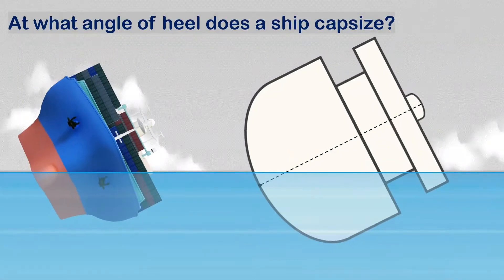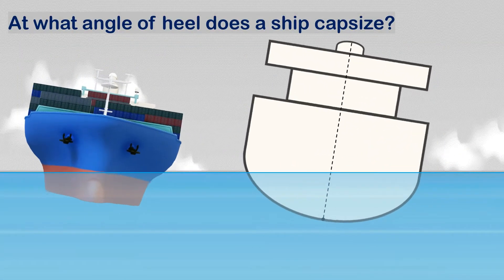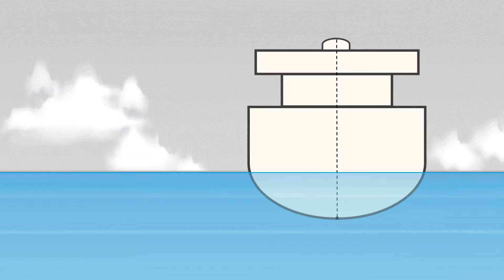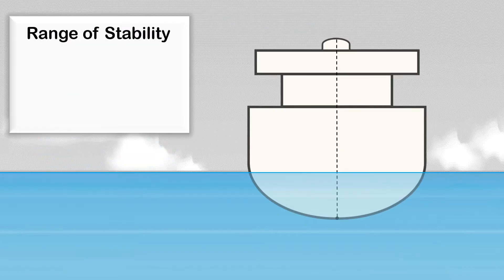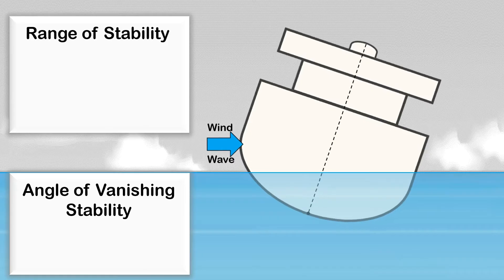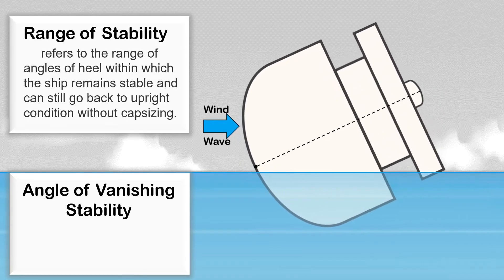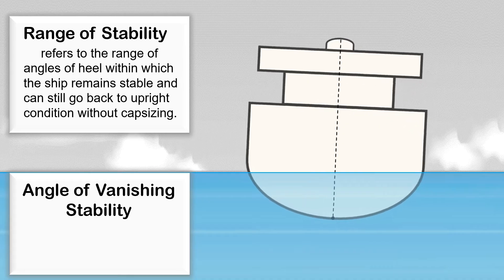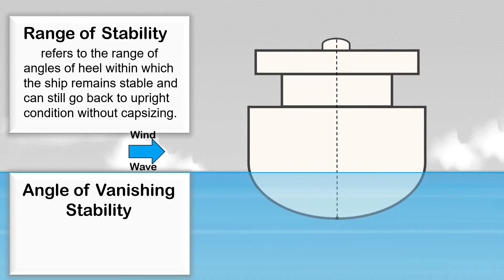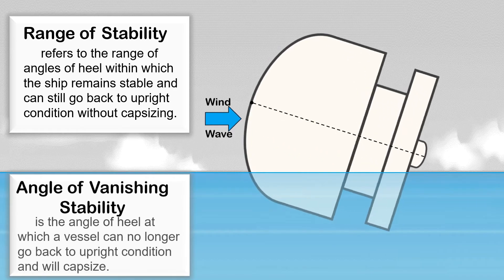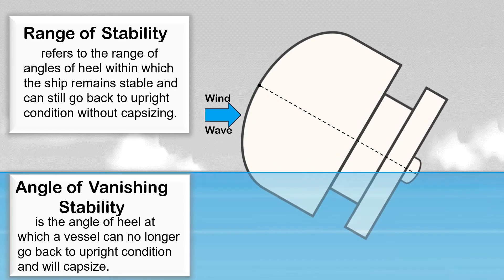For us to determine at what angle of heel a ship capsizes, we first need to understand the ship's range of stability and the angle of vanishing stability. The range of stability refers to the range of angles of heel within which the ship remains stable and can still return to upright condition without capsizing. The angle of vanishing stability is the angle of heel at which a vessel can no longer return to upright condition and will capsize.